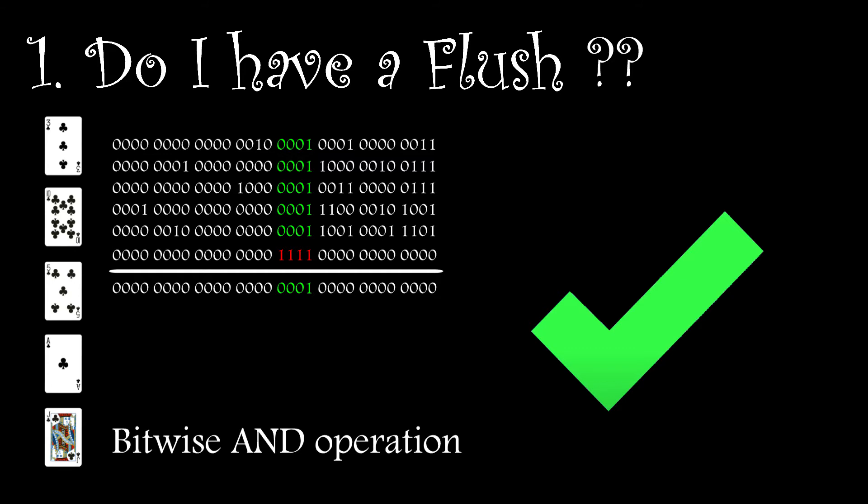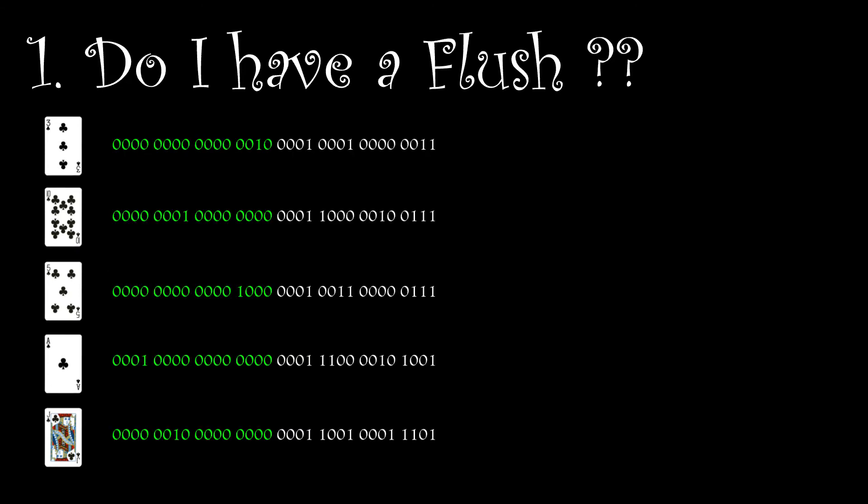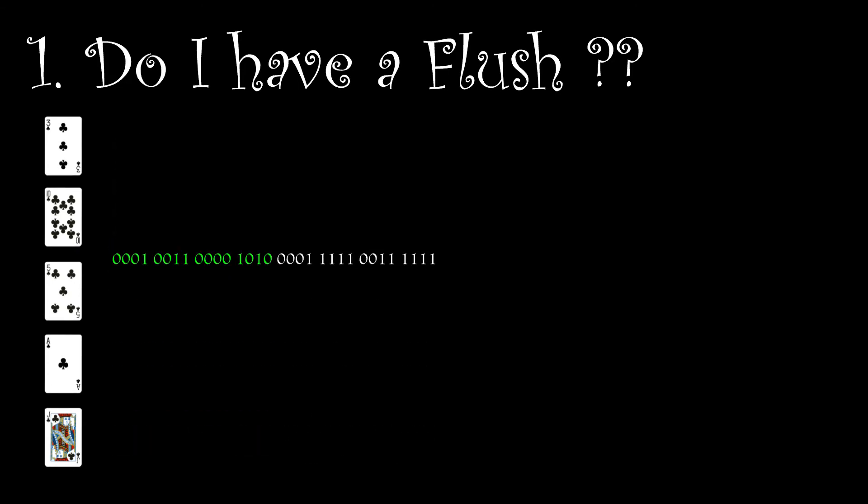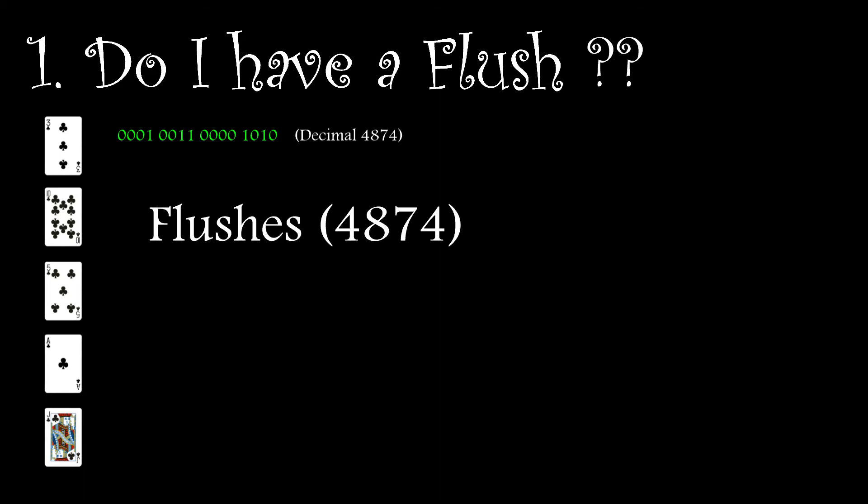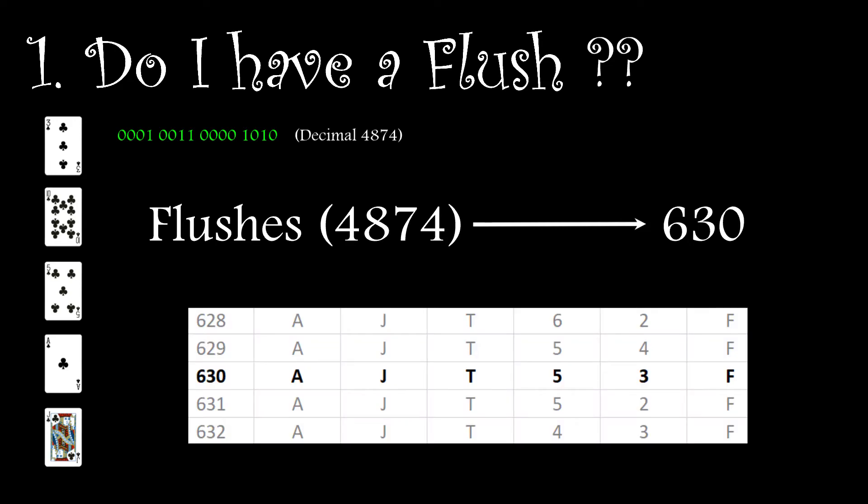So if we have a flush, we then look at the bit scheme as before and apply a bitwise OR operation to it and bit shifted 16 bits to the right. This gives us our array index and we can retrieve our hand ranking from that row. Double checking it against our original table, we find that we do indeed have the correct cards and hand ranking.